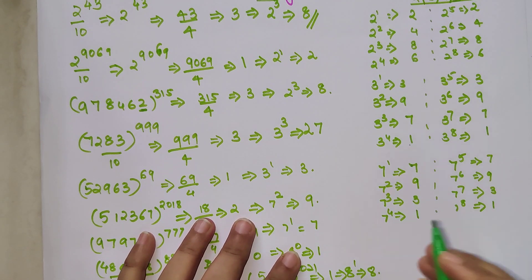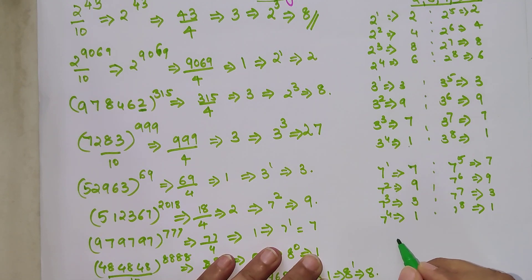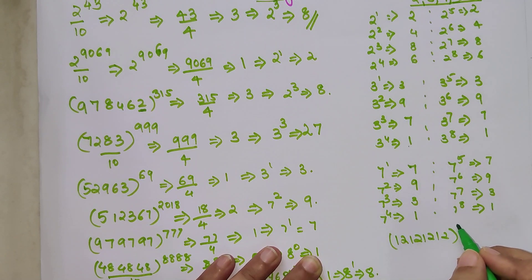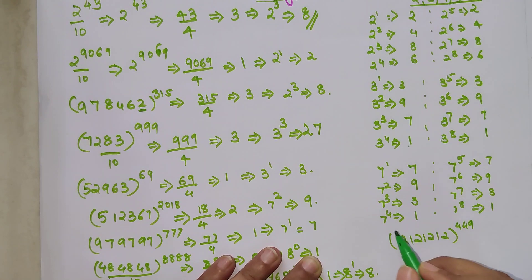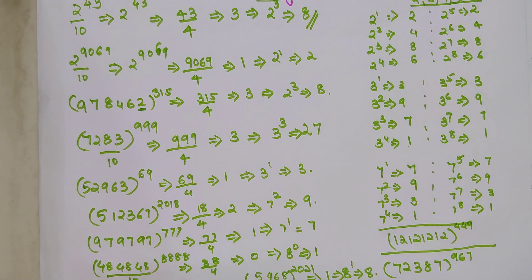Now let me give you a few practice sums. First: what is the last digit of 12121212 raised to 449? Second: what is the remainder of 72387 raised to 967, divided by 10? Do let me know your answers in the comment section.